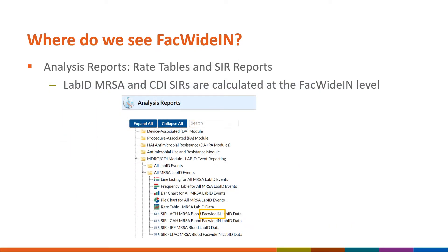We also see FACTWIDE-IN referenced in the NHSN analysis reports. If your facility is interested in rates at the FACTWIDE-IN level, they can be found in the rate tables reports under each organism folder. SIRs for MRSA and CDI LabID are calculated at the FACTWIDE-IN level for acute care hospitals, and you can see that indicated in the SIR report titles and within the report as well.